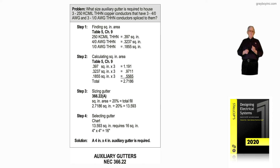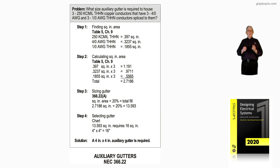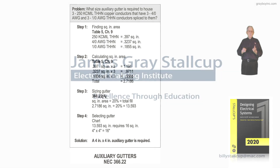We would go to the chart on the back inside cover of the design book, and we would take a 4x4, which would be 16 square inches of area. Yes, it will house 13.593 square inches. So the solution and answer is a four inch by four inch auxiliary gutter is required, and will house the square inch area calculated in step two — just like the quick calc showed.